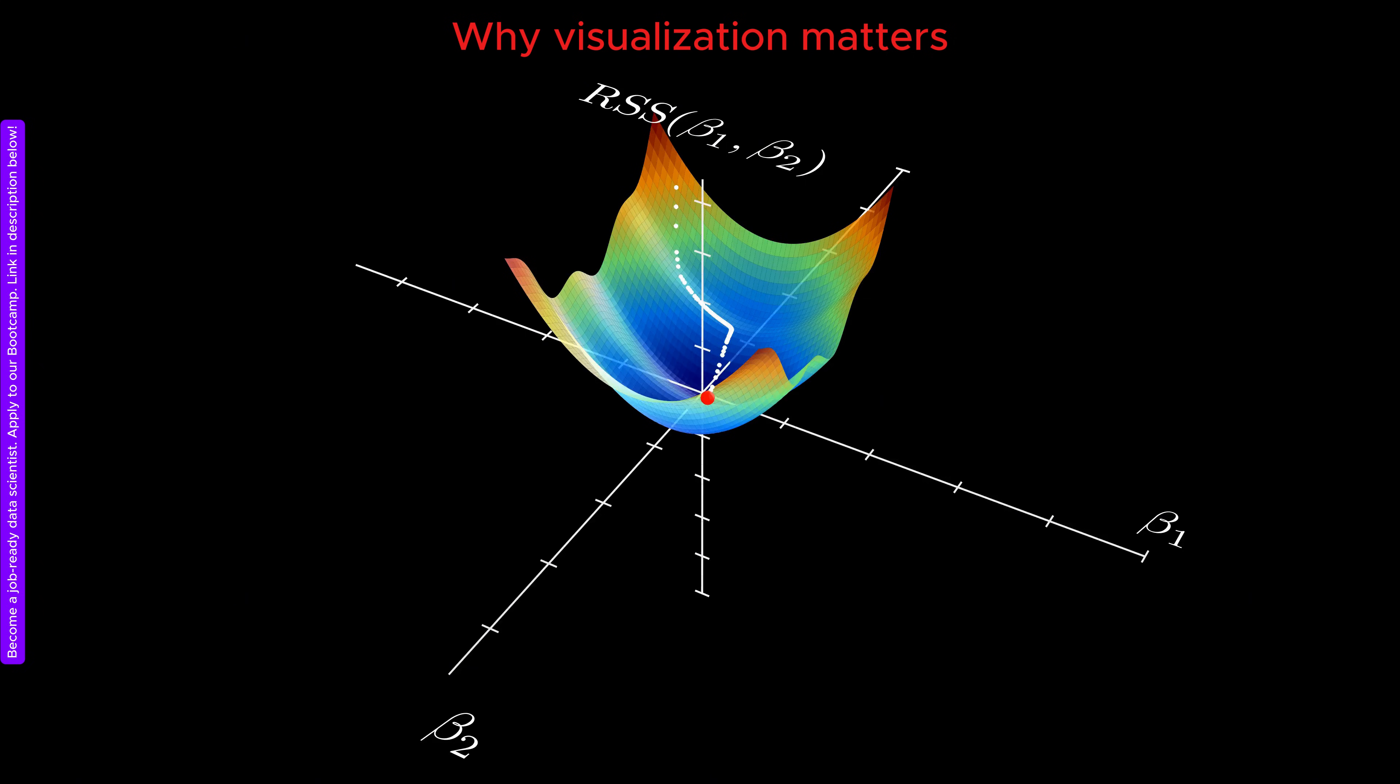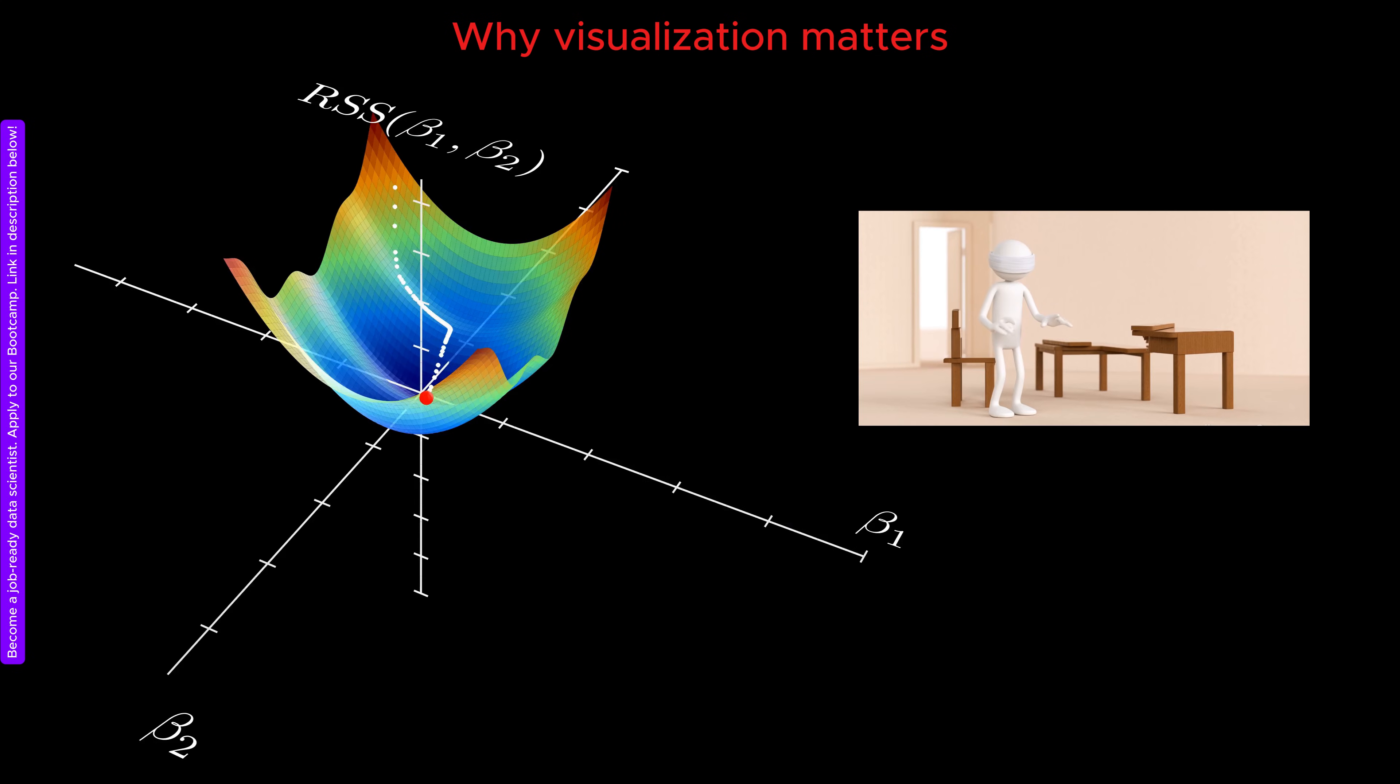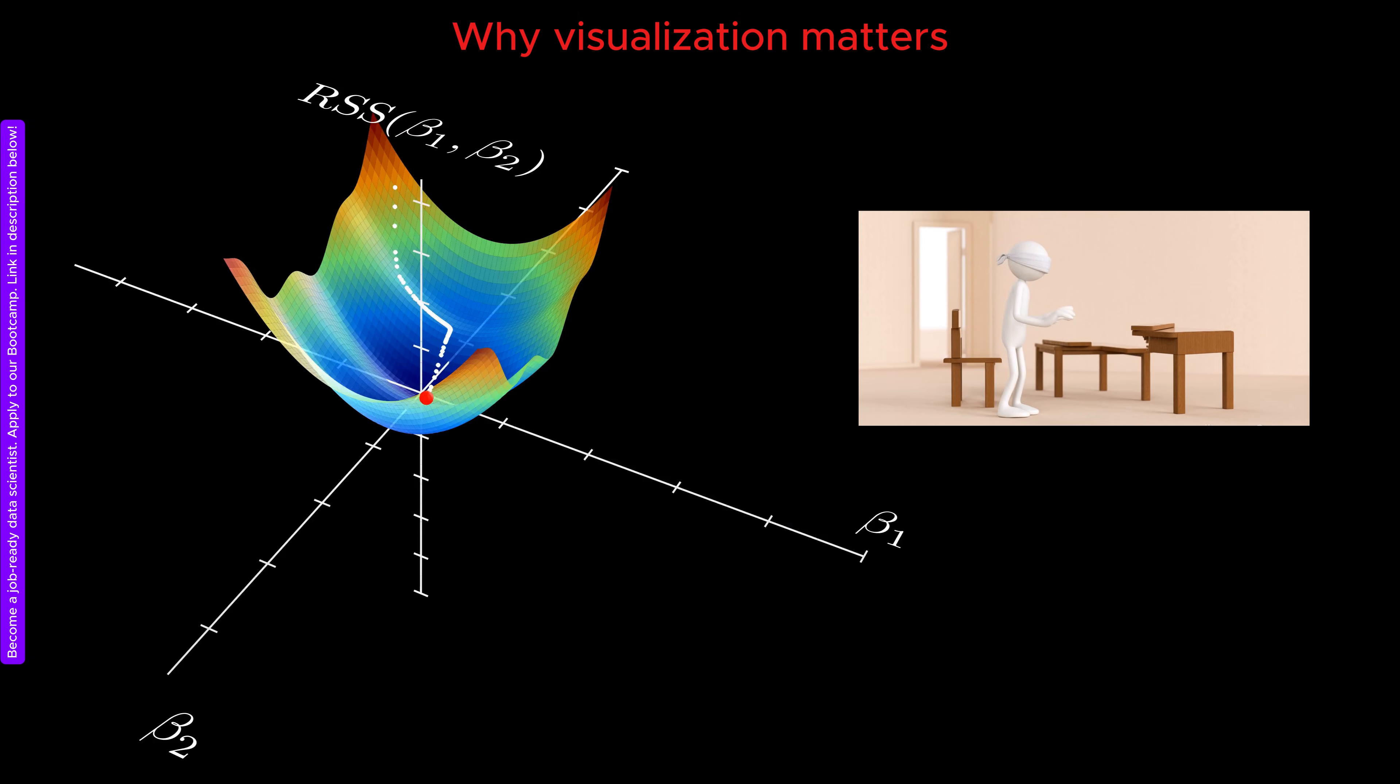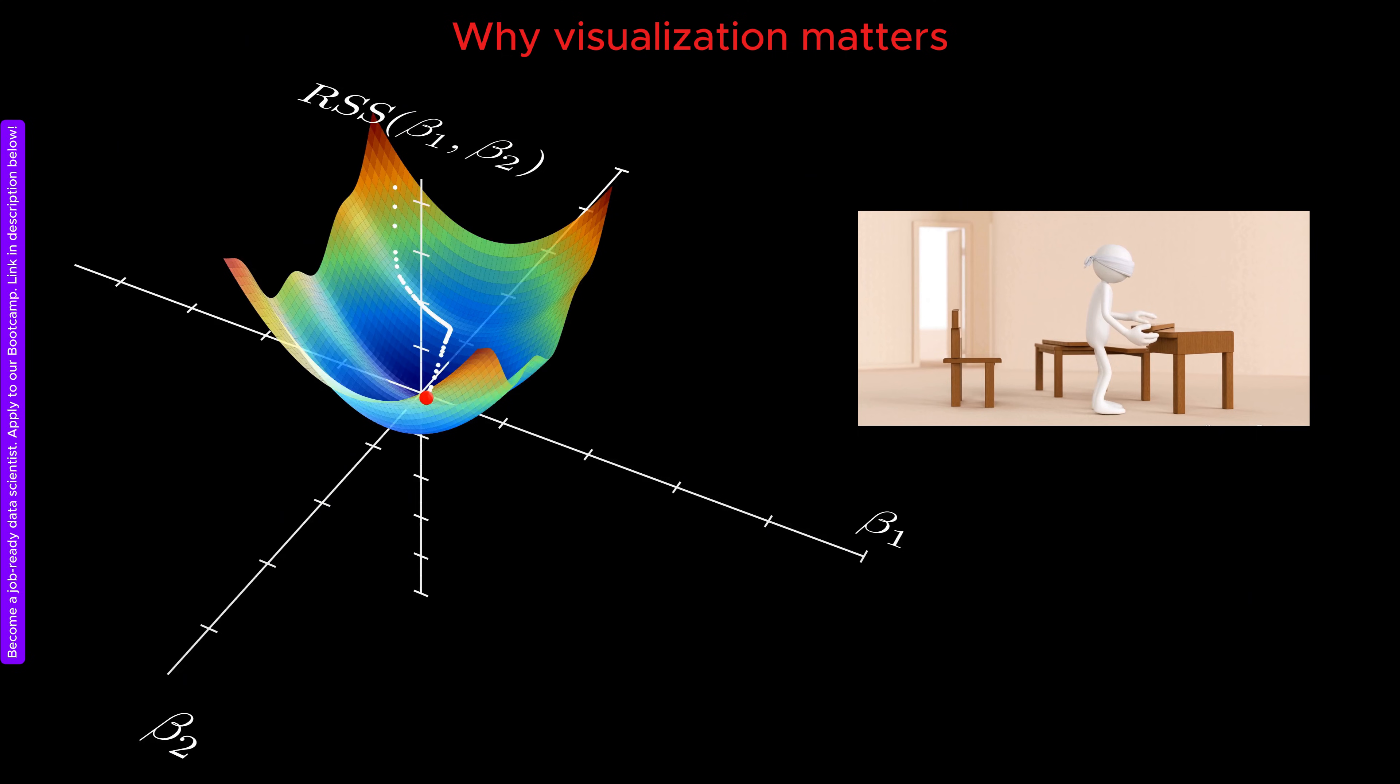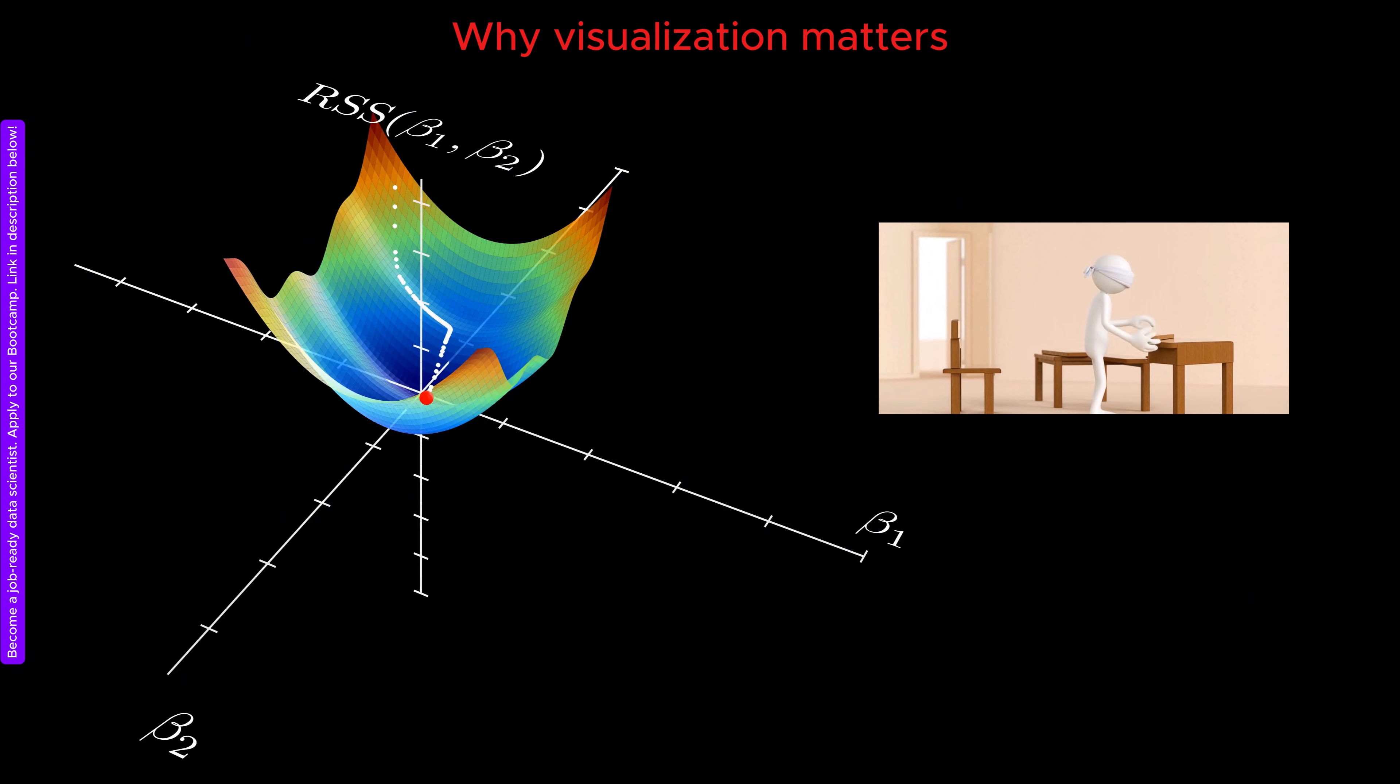One of the most common optimization methods we use is gradient descent. Gradient descent is a bit like trying to find something in your room while your eyes are closed. You move your hands around, feel the objects near you, and based on that local information, you take a small step in what seems like the right direction. Step by step, you hope to get closer to what you are looking for. Now imagine how much easier that task would be if you simply opened your eyes and looked around.